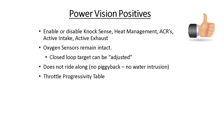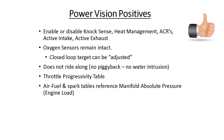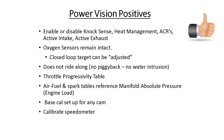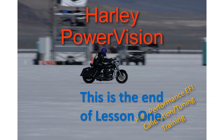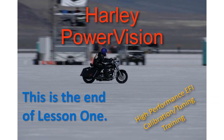On throttle progressivity, we can adjust the throttle progressivity tables on electronic throttle control bikes. We can adjust the air-fuel and spark tables based off of manifold pressure and engine load, so that way we can richen things up when the engine is working harder and pull timing out when the engine is working harder. The base calibration is set up for any cam. We can also calibrate speedometers. This is the end of lesson one.